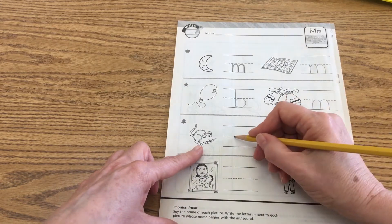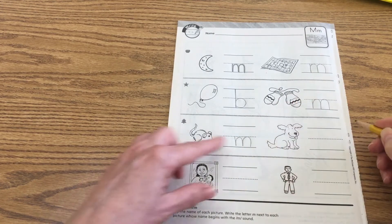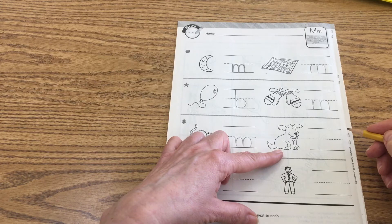All right, let's go down here to the picture of the mouse. Echo mouse. Mmm. Mouse. We're going to write that with an M for the mmm sound.